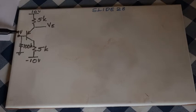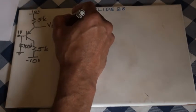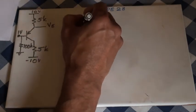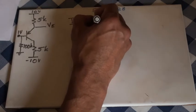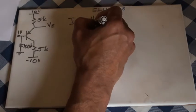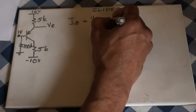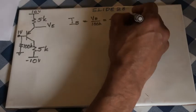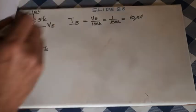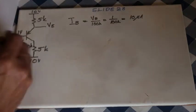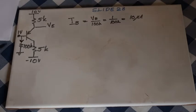If you have one volt at the base, there must be a current through 100K. We can work out that current - that current must be the same as base current IB. Therefore, base current is voltage at the base divided by 100K, that is 1 over 100K, which equals 10 microamperes.